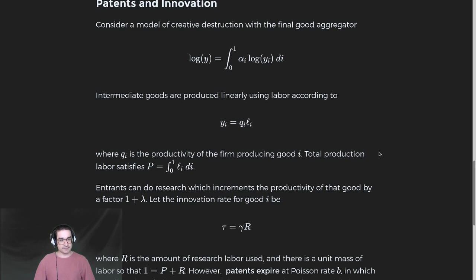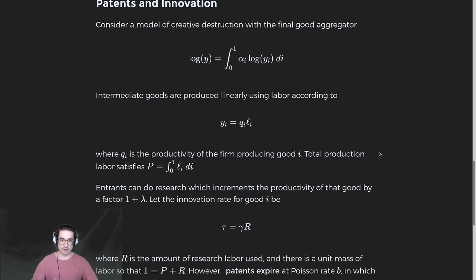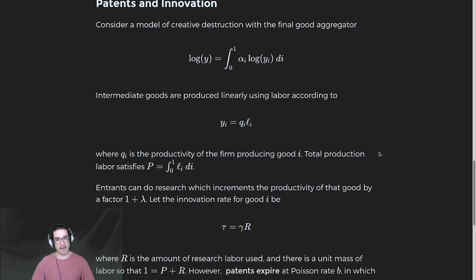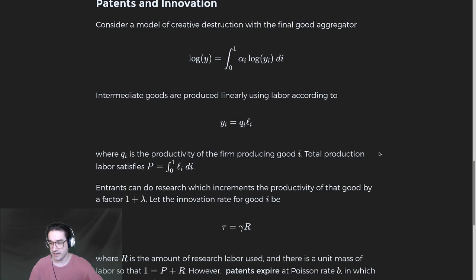With infinite-length patents you still get booted out by a competitor. With finite-length patents, you either get booted out by a competitor or your patent expires and you revert to competitive production — anyone can use your technology. That puts you in a Bertrand situation with many potential competitors, meaning zero profits and efficient levels of production, so the monopoly goes away. You'll have to figure out, for given innovation and patent expiration rates, what fraction of products are patented versus unpatented.